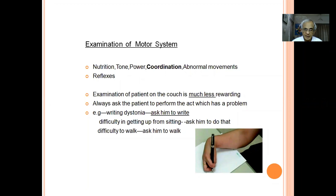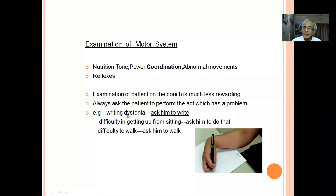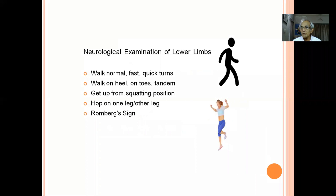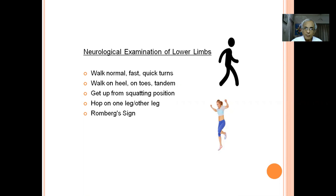Examination of the patient on the couch is much less rewarding. Always examine the patient for the difficulty for which they have come. For difficulty in walking, ask the patient to get up from the chair and start walking. If they get up without difficulty, the proximal muscles are normal. Then ask them to walk normally, then faster, then make a quick turn. In early cerebellar dysfunction, patients walk normally but stagger on quick turning.